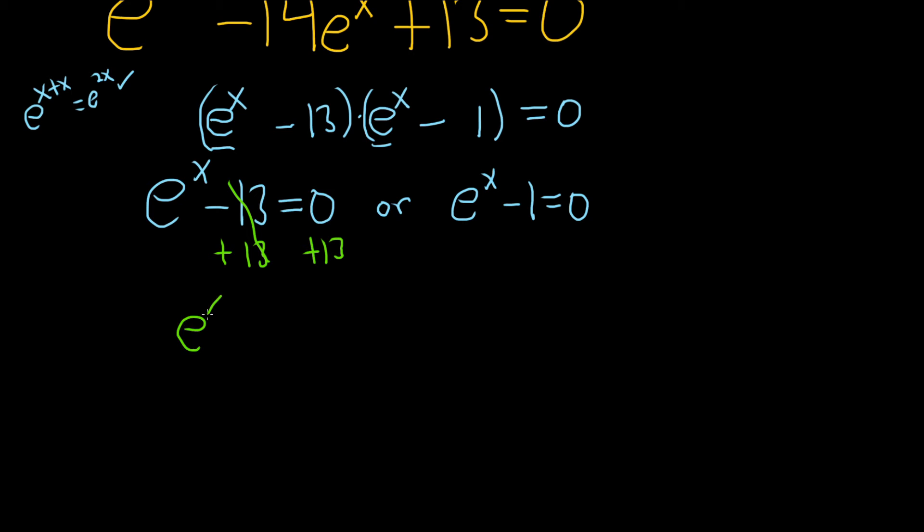So we have e to the x equals 13. And then to get rid of the e, you can just take the natural log of both sides. So we have ln e to the x equals ln of 13.